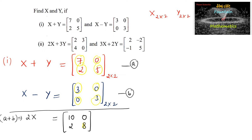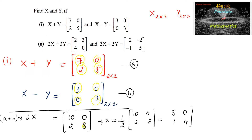So 2 times matrix X is equal to [10, 0; 2, 8], which gives us X equal to 1/2 times [10, 0; 2, 8]. Dividing each element by 2: 10/2 is 5, 0/2 is 0, 2/2 is 1, and 8/2 is 4. So we get matrix X as [5, 0; 1, 4], which is a 2 by 2 matrix.